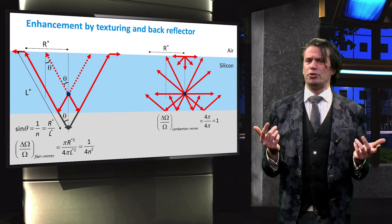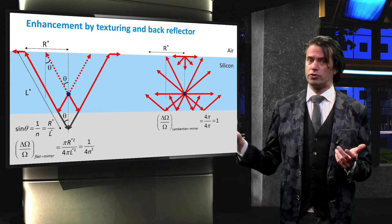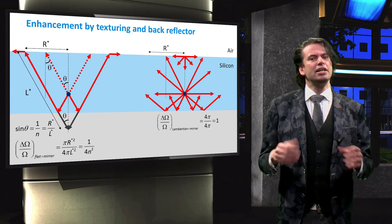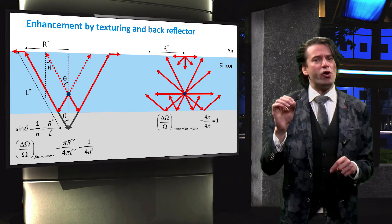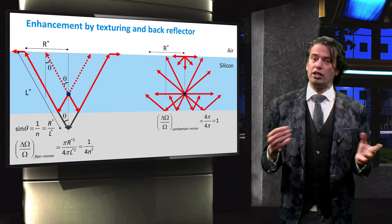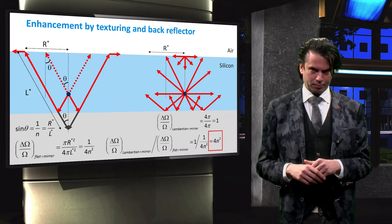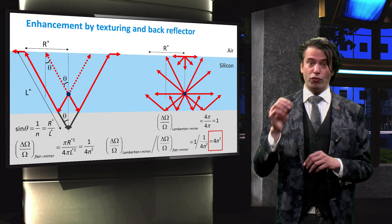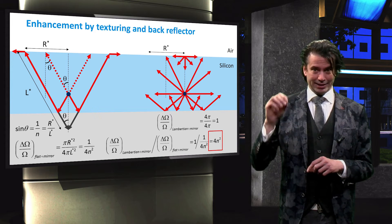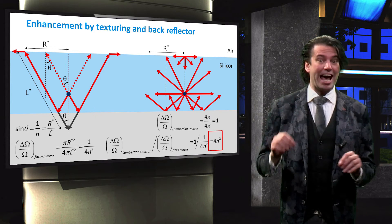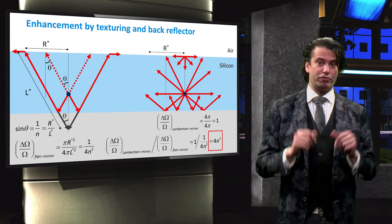Now we again introduce a Lambertian scatterer as a front surface. With an ideal back reflector in place, the light can again reach our point in the bulk from all angles. Delta Omega therefore still equals Omega. Comparing these two situations yields an absorption enhancement of 4N squared. This is the maximal absorption enhancement as defined by the Yablonovitch limit.